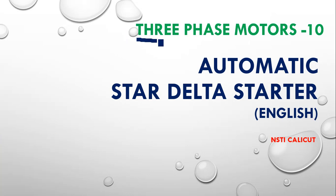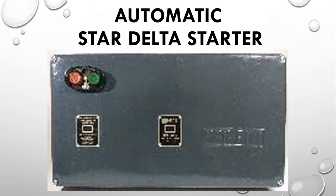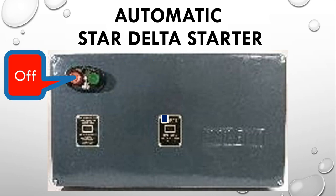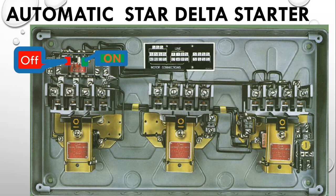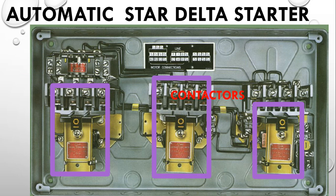Welcome to three-phase motors part 10. Today we are going to discuss the automatic star delta starter. This is the physical appearance of the automatic star delta starter. You will be able to see a green button which is 'on' and a red button which is 'off'. It is similar to a semi-automatic star delta starter physically, and there is an overload relay attached to the mains conductor with on and off buttons available on the front panel.